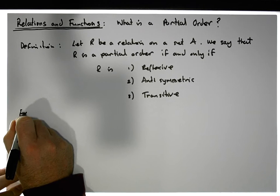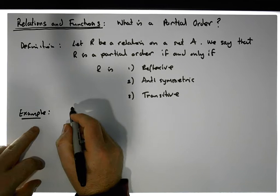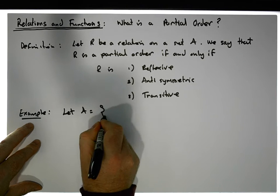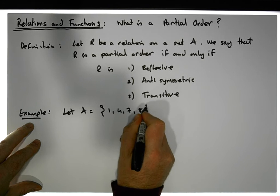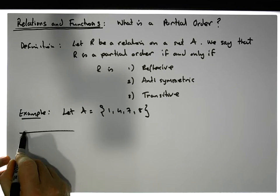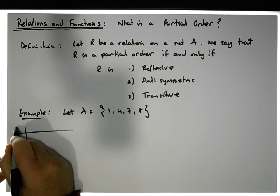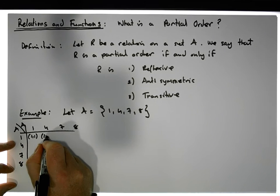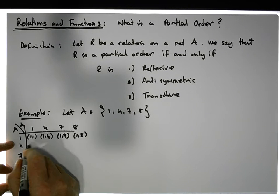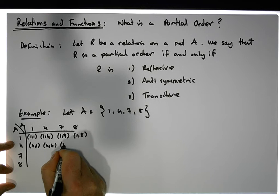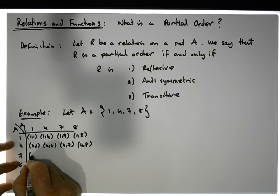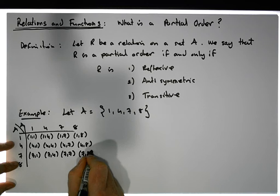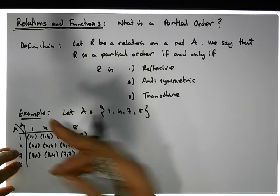Let's consider an example. Let A be the set containing the values 1, 4, 7, and 8. We're going to construct the cross product A cross A. So we have: (1,1), (1,4), (1,7), (1,8), (4,1), (4,4), (4,7), (4,8), (7,1), (7,4) — wait, I have (7,7) — and (7,8).